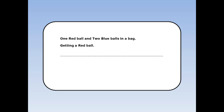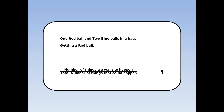I've got one red ball and two blue balls in a bag. I'm going to pick one out at random. What's the probability of getting a red ball? The number of things we want to happen is 1, because there's one red ball. The total number of things that could happen is 3, because there's three balls in the bag. The probability is 1 over 3, or a third.